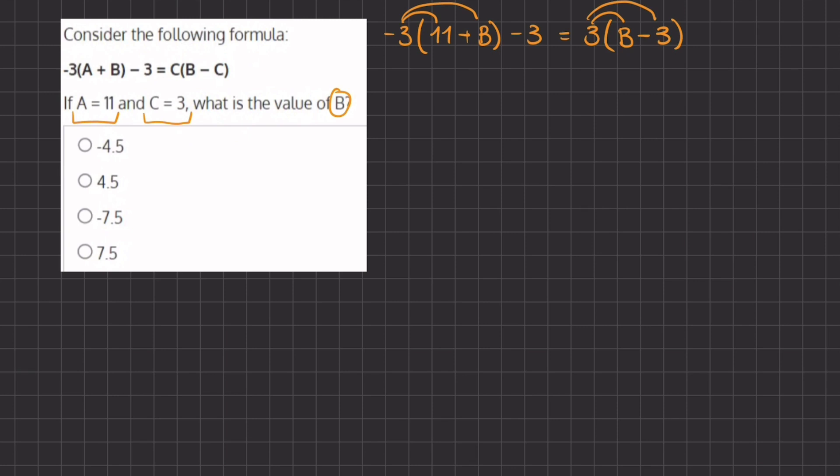So negative 3 times 11 we have negative 33 and negative 3 times b we have negative 3b minus 3 equals, now we'll distribute this positive 3, 3 times b gives us 3b and 3 times negative 3 gives us negative 9.